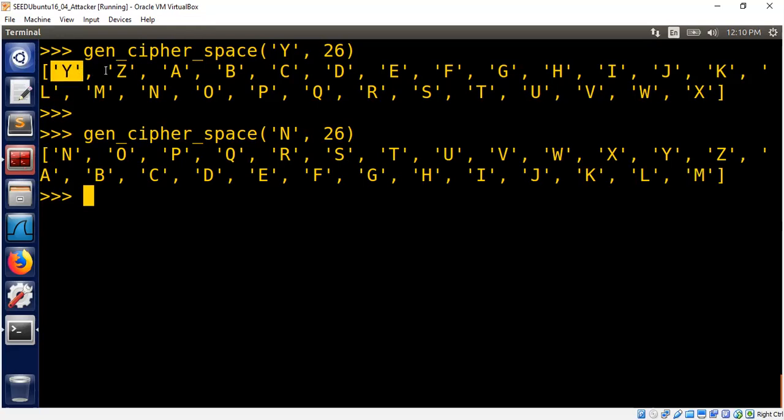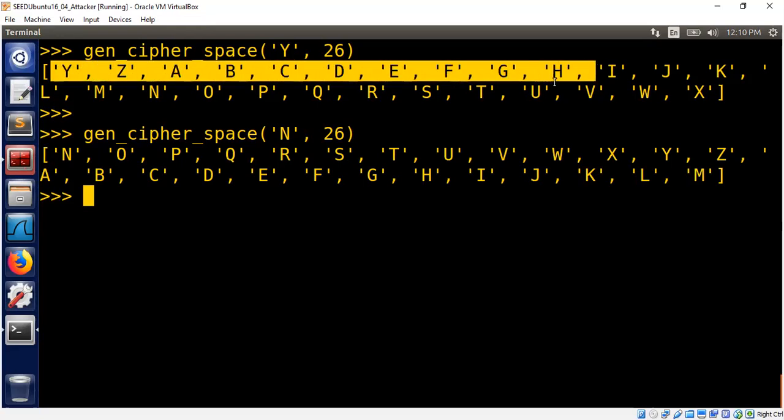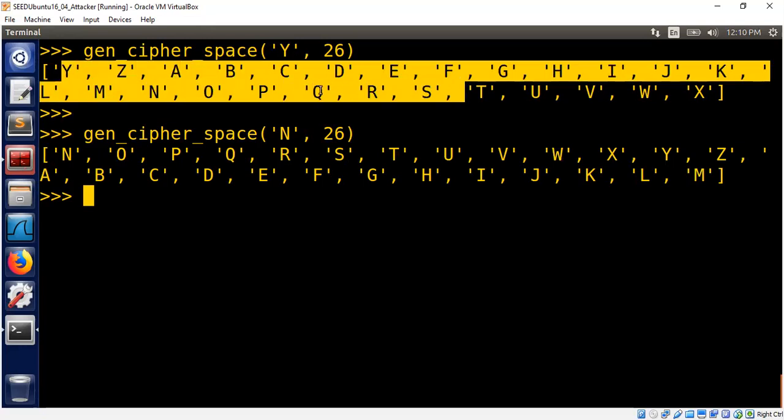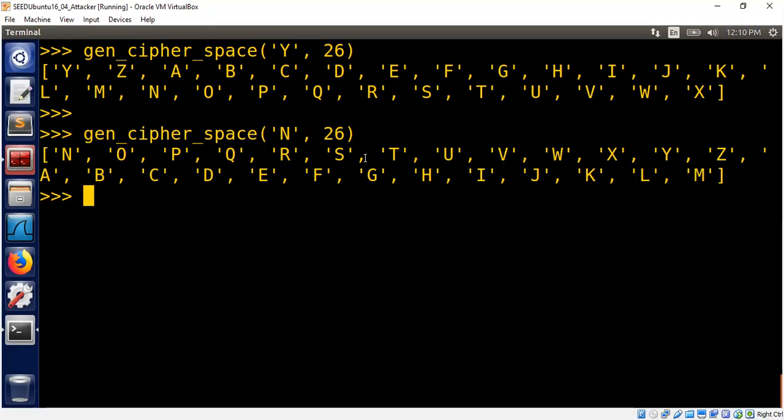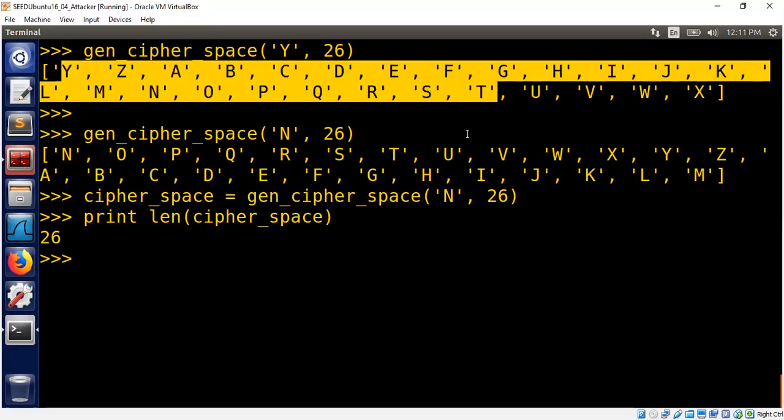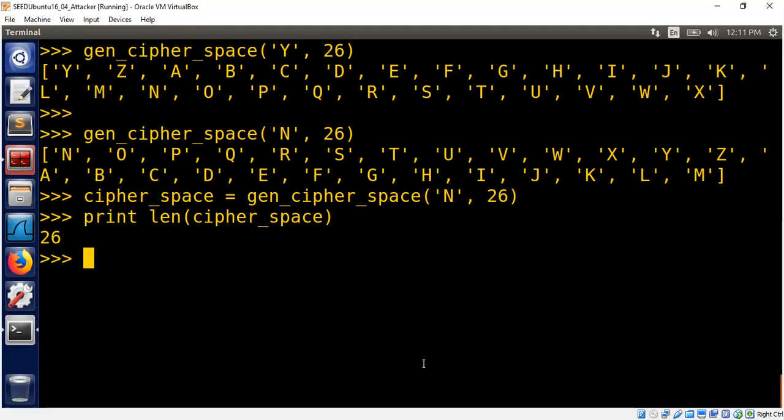Each of the ciphertext characters is unique. There is no duplication whatsoever. Furthermore, if you read from A through Z, you will see all of the characters are present here. We can confirm it. Let me call this thing for a moment and print the length. Let's say this is the ciphertext space, cipher space. And I'm going to print the length of the cipher space. 26 characters, as I said, and all of the characters are unique.